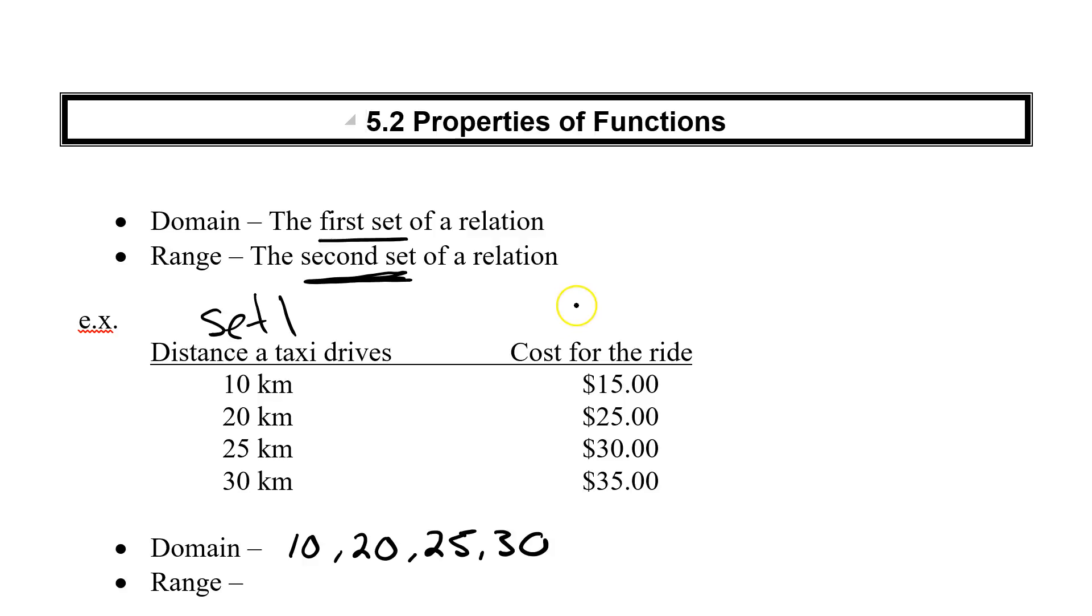From yesterday, set 2 is always in the second column. Set 2 is my range. So my range is $15, $25, $30, and $35.